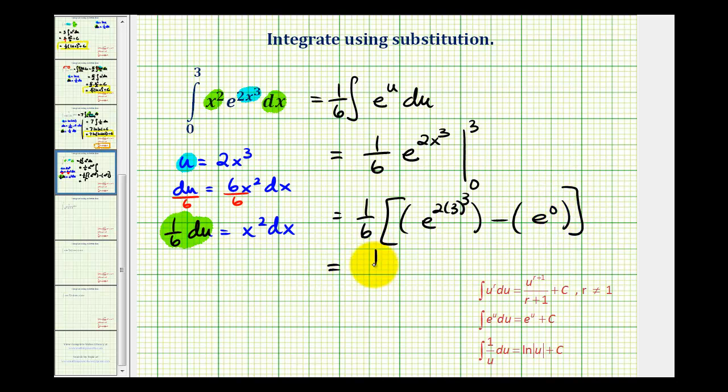So we're going to have one sixth times, this will be e to the fifty-fourth power. And be careful here, e to the zero is equal to one. So this will be the value of our definite integral. We'll take a look at a second example of definite integration that requires substitution in the next video.